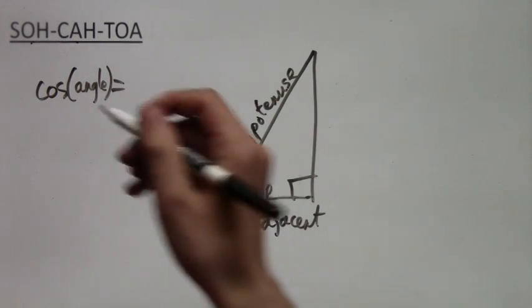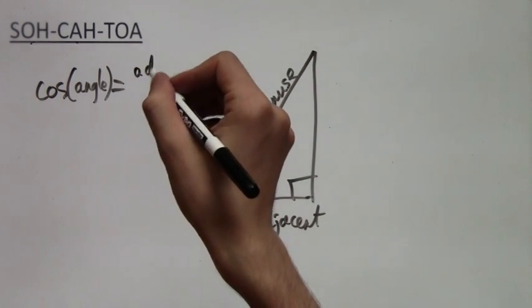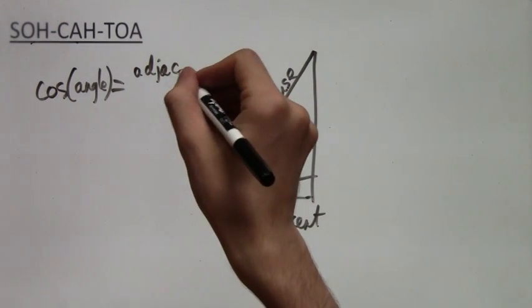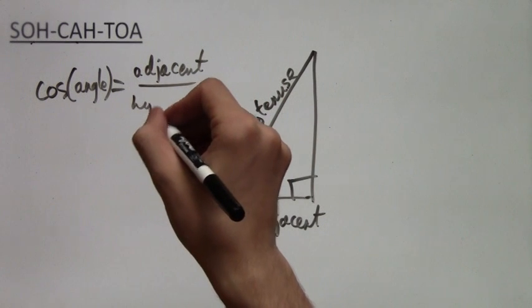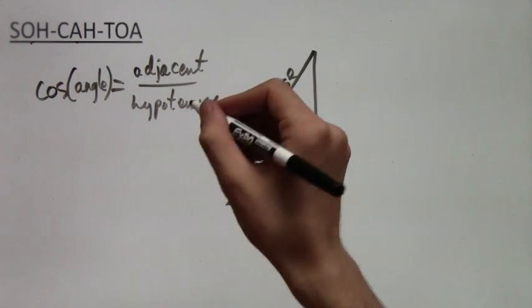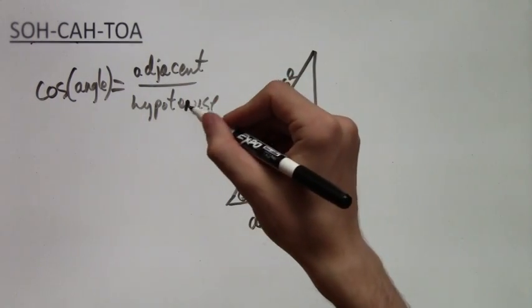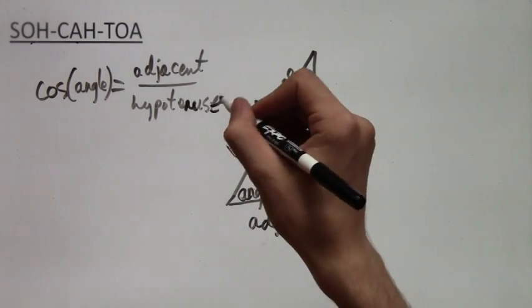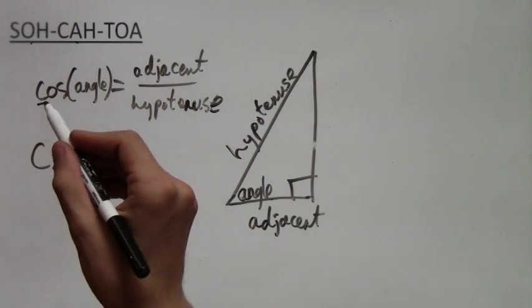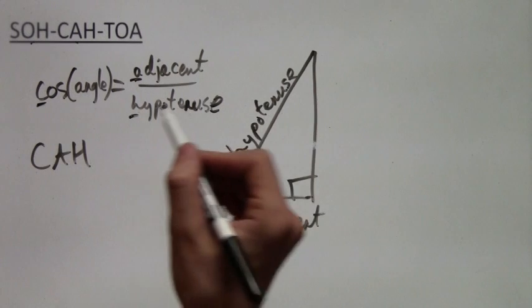And there's the hypotenuse of course. And the cosine of this angle is equal to the ratio of the adjacent side to the hypotenuse. So in other words, the adjacent side length divided by the hypotenuse's length. So that is what the CAH in SOH-CAH-TOA stands for: cosine equals adjacent over hypotenuse.